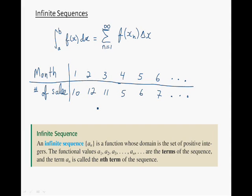Making the link with our previous example, the month gives the input value to the function, and the output value is the number of sales, which is also the terms of the infinite sequence.